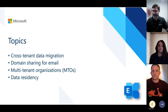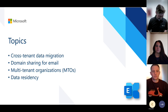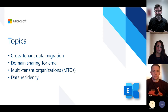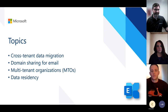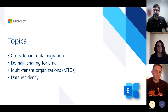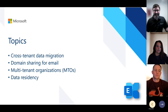Heidi has a question: she's trying to wrap her head around UPNs and logins. They're stamping the target UPN into the source. When somebody's mailbox is actually migrated, what are they logging in with? They were originally logging in with their primary SMTP slash source UPN — but the source UPN isn't going to the end, right?